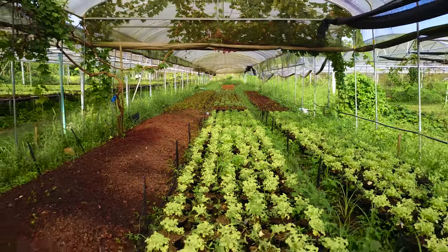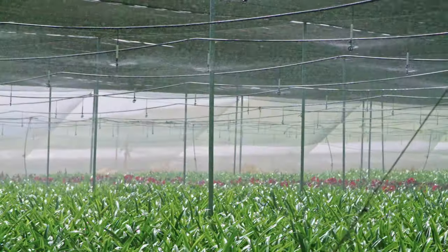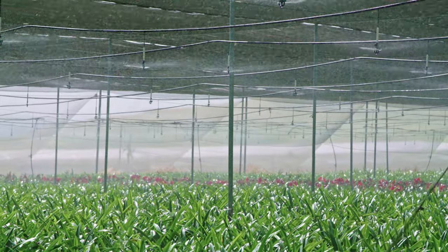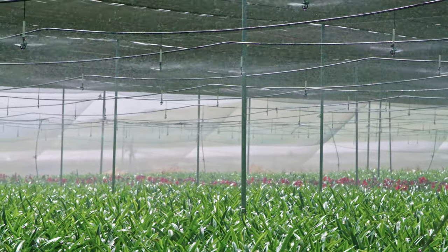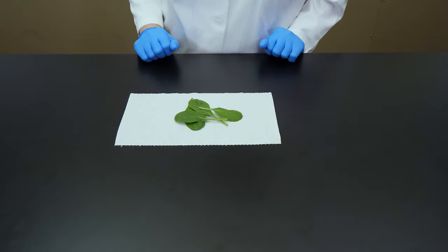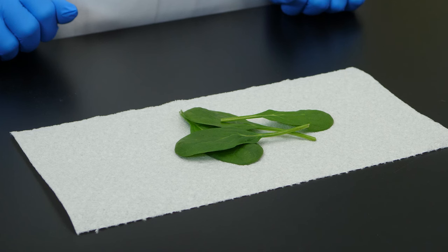It is not possible to see photosynthesis at work because it happens on a molecular level, but we can see the effects of photosynthesis in this experiment. To demonstrate that photosynthesis produces oxygen, we need some fresh green leaves. For this experiment, we will use baby spinach leaves.